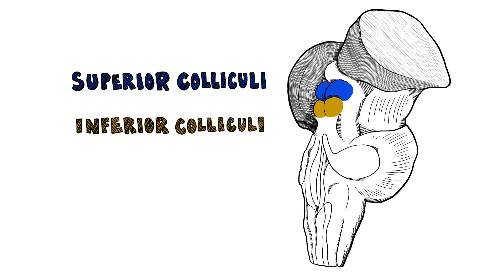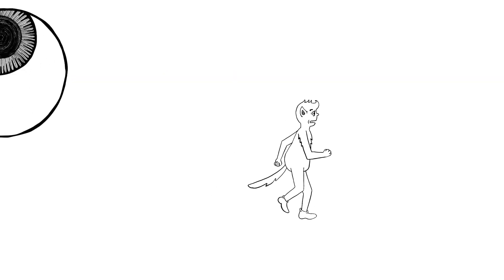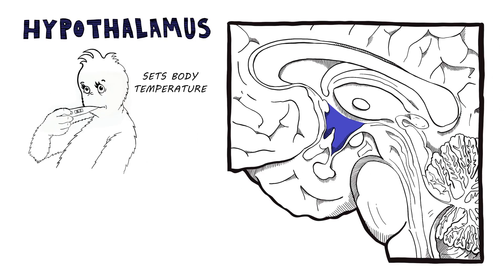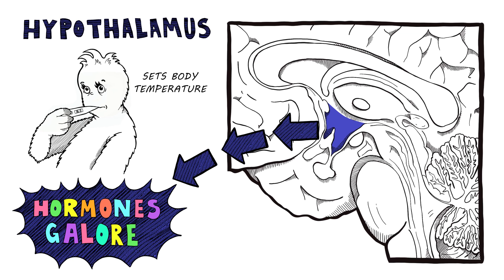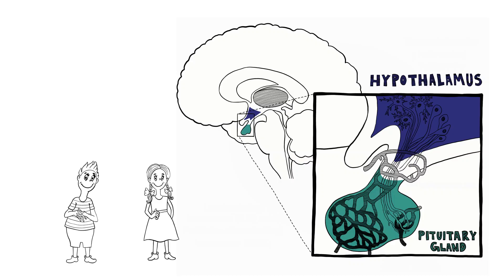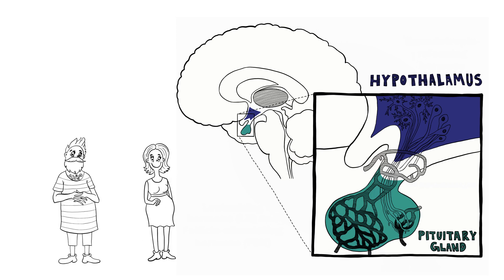Superior and inferior colliculi sit at the brainstem's back — without them, vision and eye movements would be all out of whack. The hypothalamus sets your body temp and releases hormones galore, and contains the suprachiasmatic nucleus which runs your circadian rhythms. The hypothalamus speaks to the pituitary gland, which then produces hormones on a very grand scale.